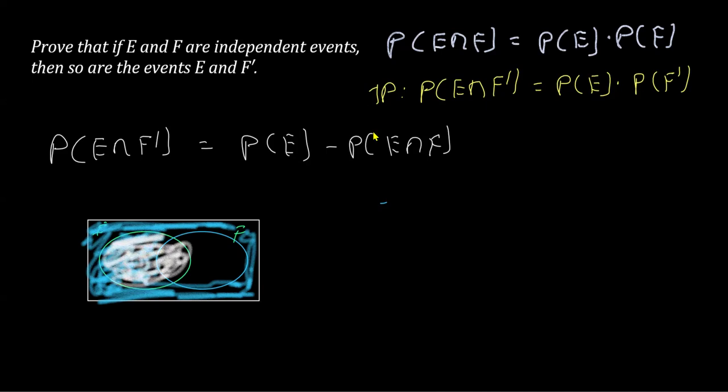So the common region, as you can figure out from here, the common region for this, because we are looking for the intersection, has to be this. This being the common region.